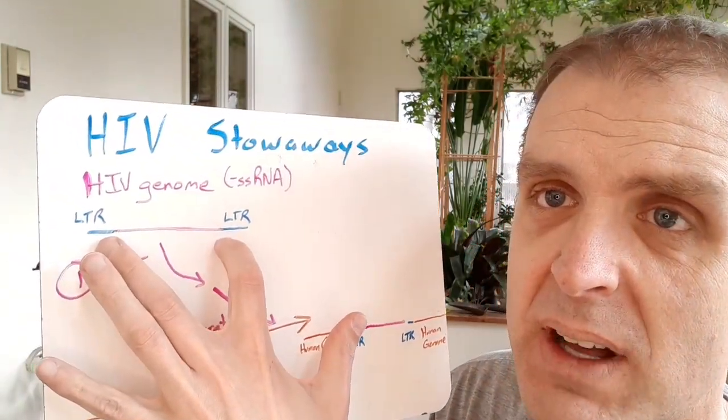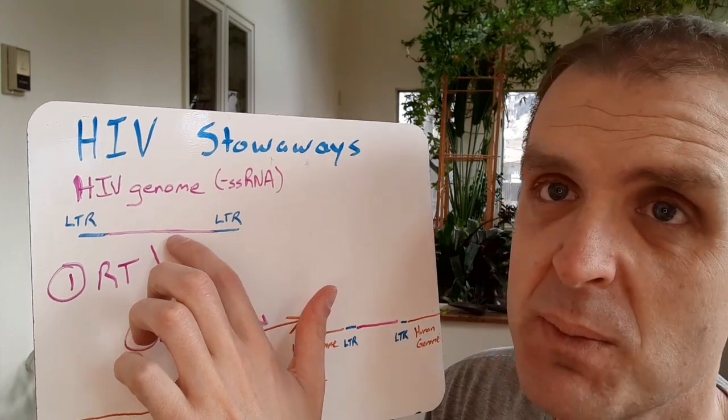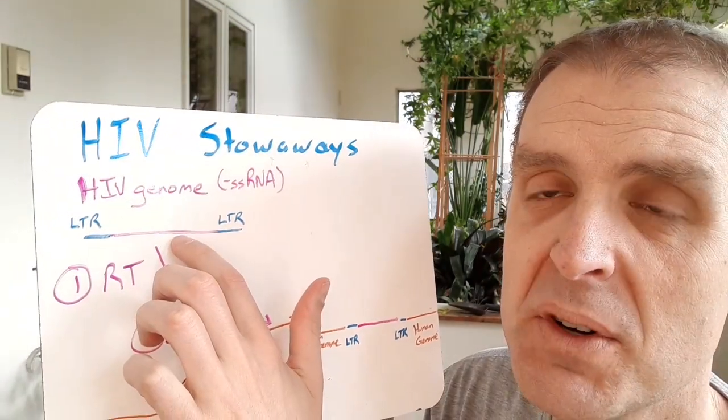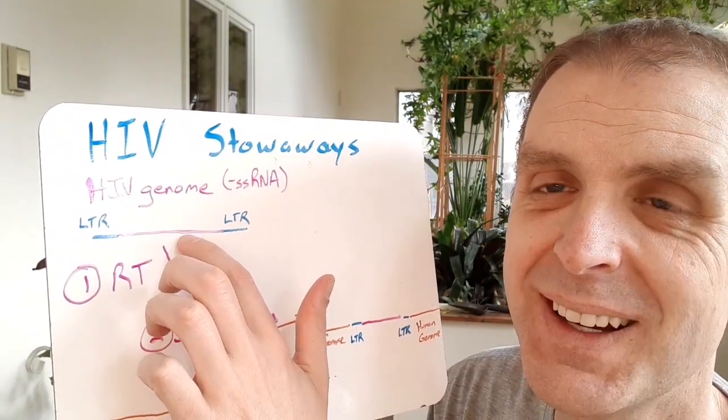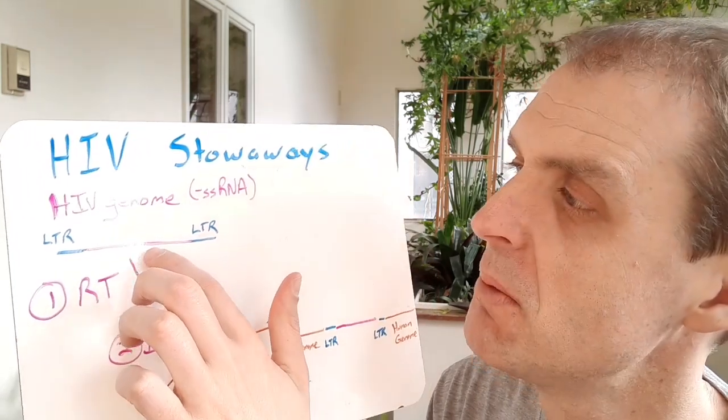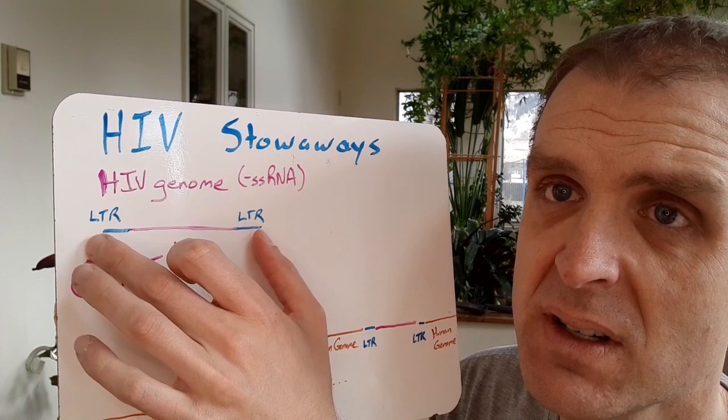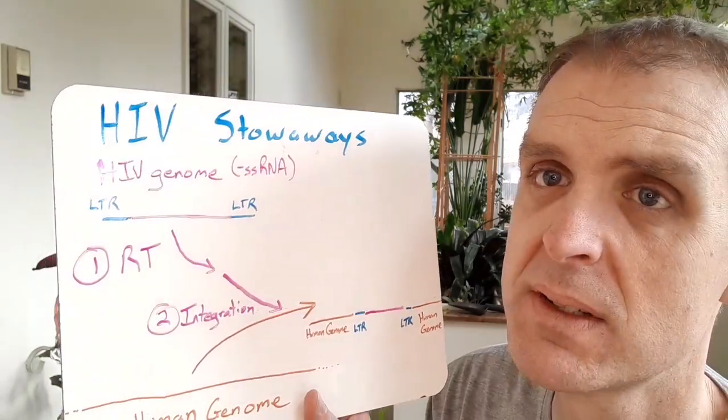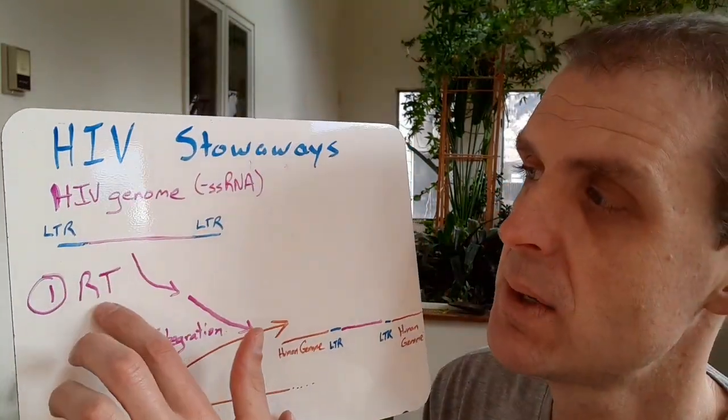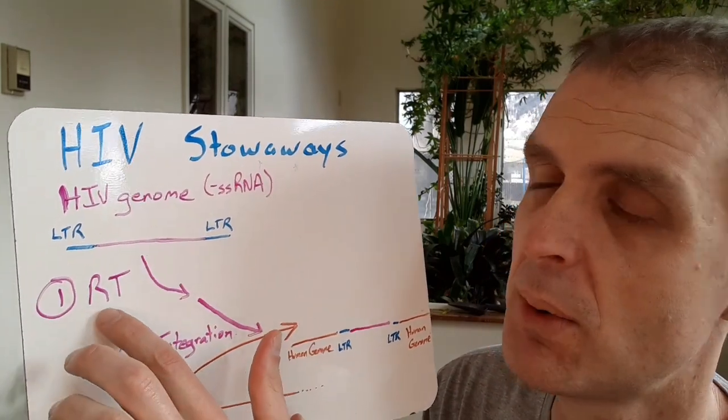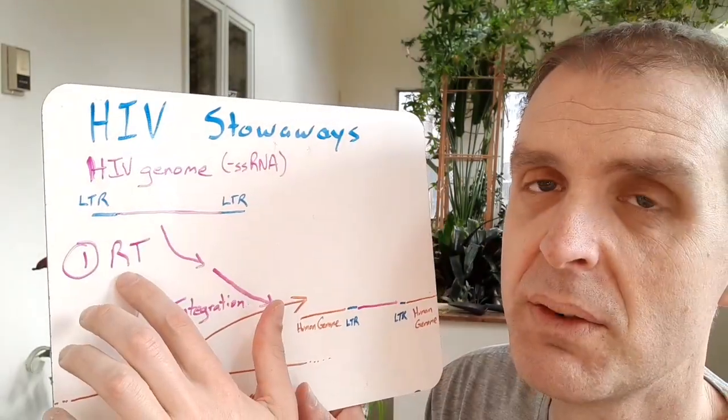This pinkish purple color represents all the genes in the HIV genome, but at the ends you've got these LTR sequences, long terminal repeats. Repeats is going to be the theme of the day, but you can use these repeats - they're important in the process of reverse transcription.